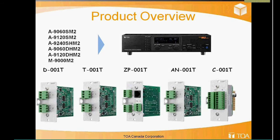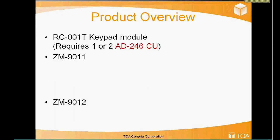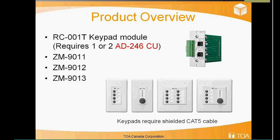Common modules include the D module for microphone or line level inputs, also available in RCA version. The T001T gives you two balanced line outputs, usually fed to power amplifiers. The ZP001T is the phone page interface module, the AN001T is the ambient noise controller, and the C001T is the contact input module. The new RC001T keypad module is required for any of the newer style keypads — it does not work on the original 9000 series.